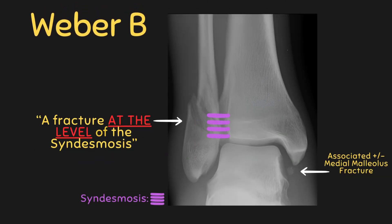Weber B fractures are seen in 20 to 25 percent of all ankle fractures. These fractures occur at the level of the ankle syndesmosis and can be either stable or unstable depending on the type and extent of injury. Weight-bearing x-rays may be performed to assess for talar shift and the occurrence of a syndesmotic injury. In most cases these fractures are spiral fractures, as shown here. Weber B fractures may also present with an associated medial malleolus fracture, as shown in the radiograph by the loose bony fragment.